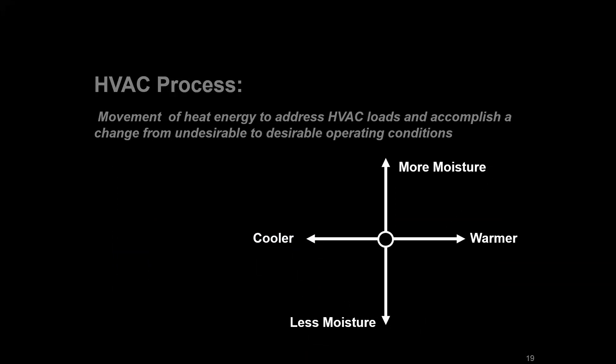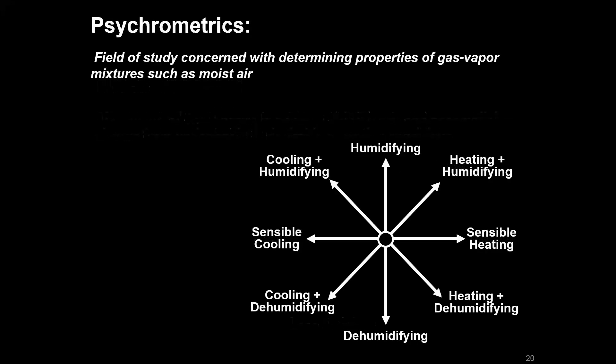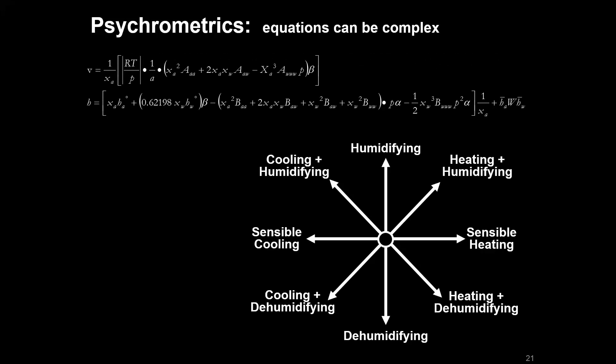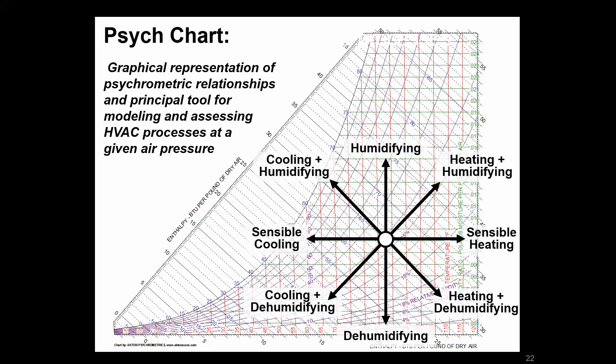Now, we're using terms like more moist, less moist, warmer, cooler air. But when we talk about looking at air for the purposes of RCX, we're going to use the more industry-common terms of humidifying, dehumidifying, sensible heating, cooling, and then the various combinations. This is governed by the field of psychrometrics, which looks at the properties of air. The equations in that field can be quite complex, but luckily we have a tool called the psychrometric chart, or psych chart, which is a graphical representation of those relationships. This is really going to be the primary tool we use to quickly assess an HVAC system looking at loads associated with the air.